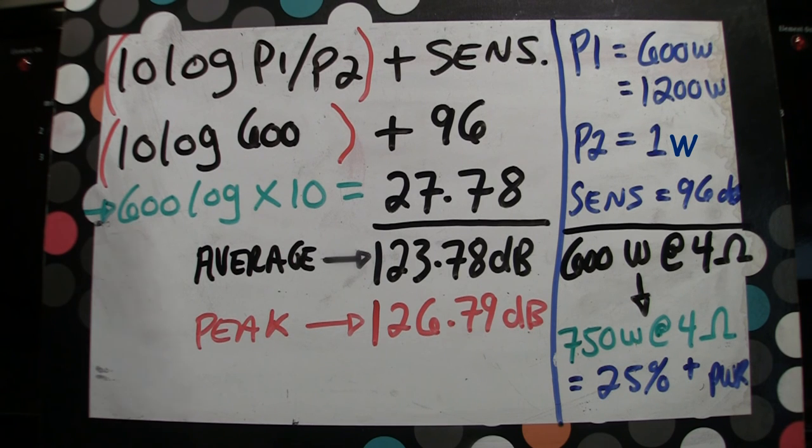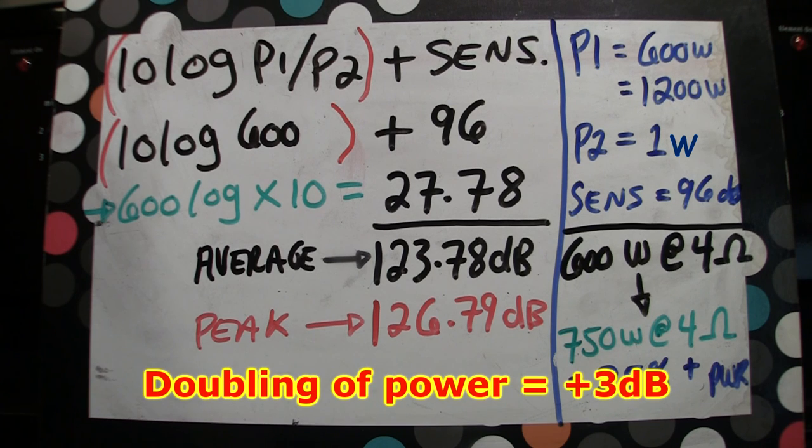Here's the trick. You don't need to do the equation twice if your peak power is double your average power. You simply just add 3 dB. Every time you double power, you end up with 3 dB more.